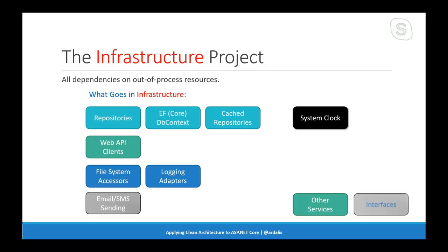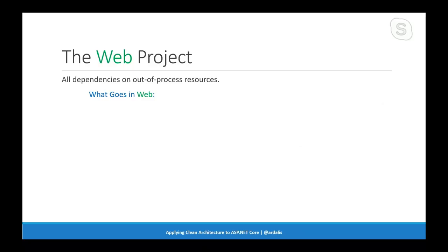You might have other services and occasionally interfaces in infrastructure — but only interfaces tightly coupled to some infrastructure concern. If you're using an Azure SDK with a custom interface that returns Azure-specific types, that interface should live in infrastructure because it depends on that SDK. The web project is your UI front end and should have things that relate to web, not business logic or other infrastructure concerns.